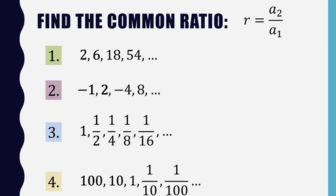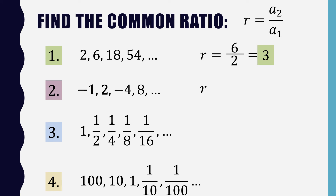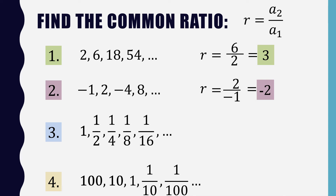Now let us try an exercise to find the common ratio using the formula R equals a sub 2 divided by a sub 1. For item 1 — 2, 6, 18, 54 — the second term 6 divided by the first term 2 gives a common ratio of 3. For item 2 — negative 1, 2, negative 4, 8 — the second term 2 divided by the first term negative 1 gives R equal to negative 2.